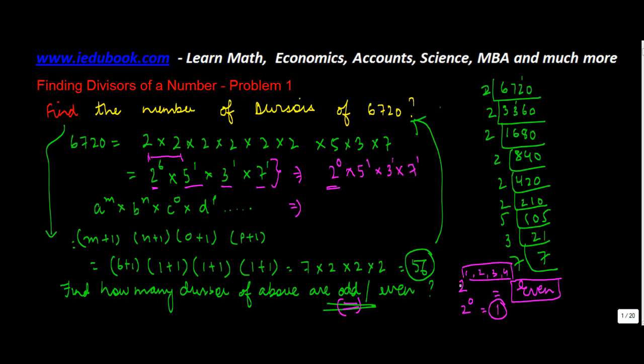Right? Why? Because 2 to the power 1, 2 to the power 2, 3, 4, 5, 6, so on, in this case, will all be even numbers. And we know that when an even number is multiplied by odd, the result is going to be even. So we replace this 2 to the power 6 by 2 to the power 0, which is nothing but 1. And 1, when multiplied with these, are always going to give you the odd multiples.